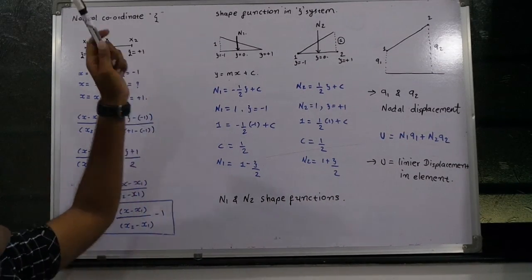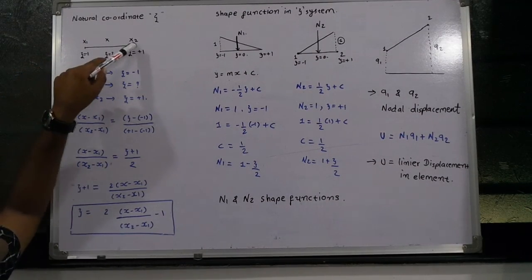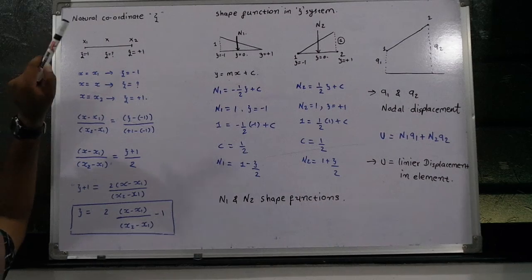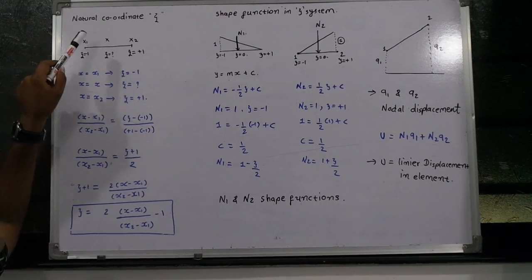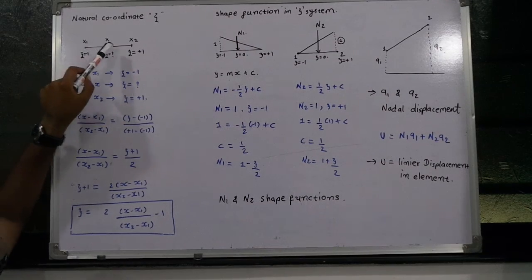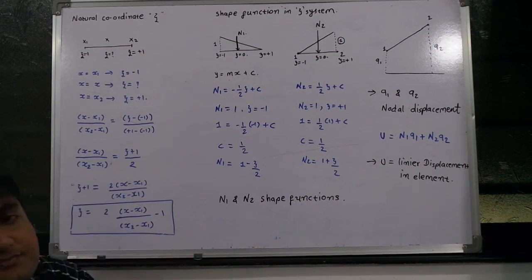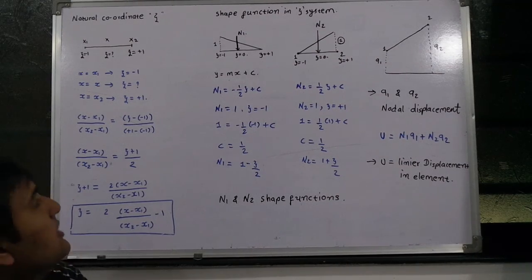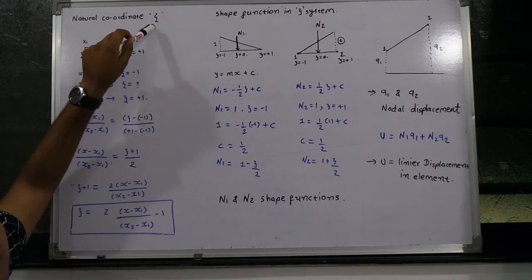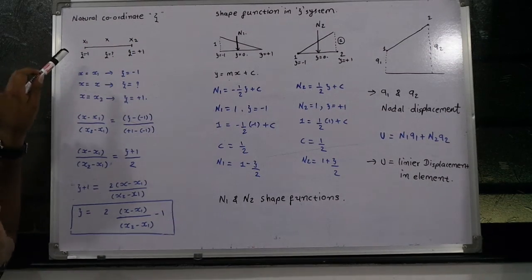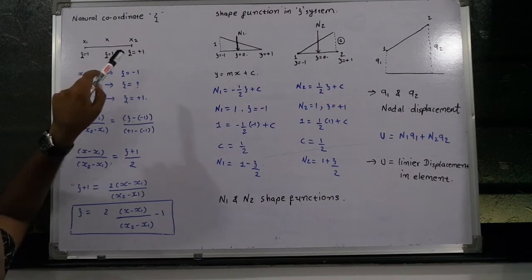First of all, I am taking one element which has node 1 and node 2. In a mathematical system, it can be defined as x1 at one end, x at some intermediate point, and x2 at the other end. The natural coordinate zeta in finite element analysis is defined in the range of minus 1 to plus 1.